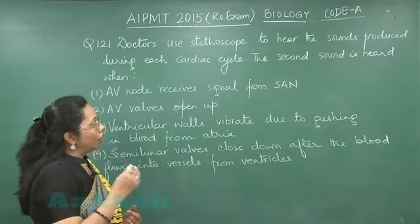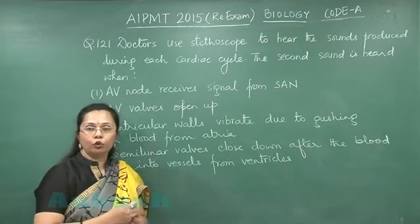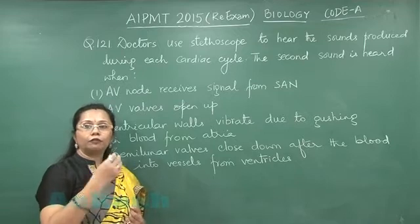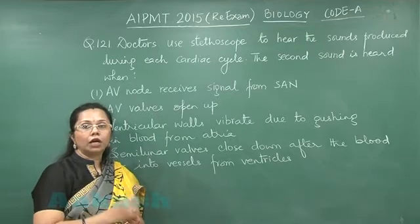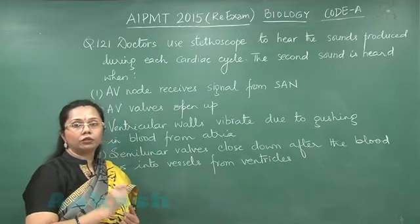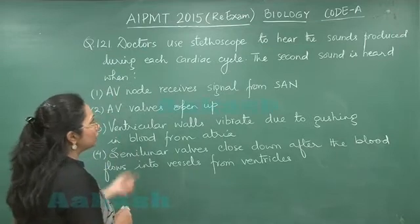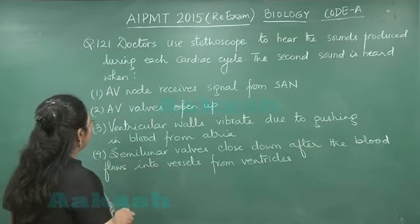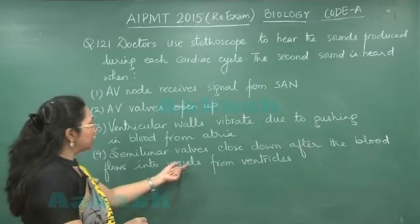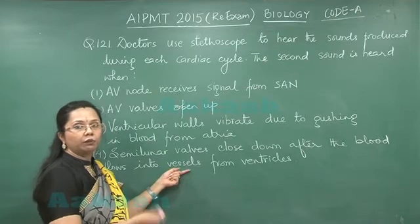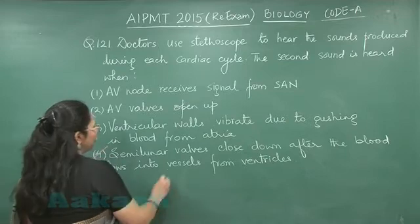At the beginning of ventricular diastole, the semilunar valves close, so that blood from the main arteries does not return to the ventricles. That sound is heard as 'dub' and is called the second heart sound. The second sound is heard when the semilunar valves close after blood flows into the pulmonary artery and aorta from the ventricles. Our answer is 4.